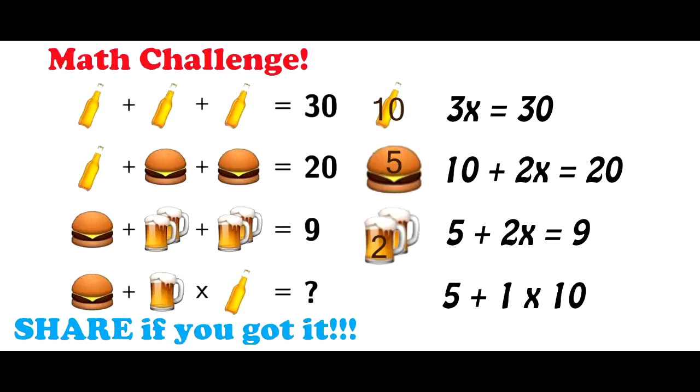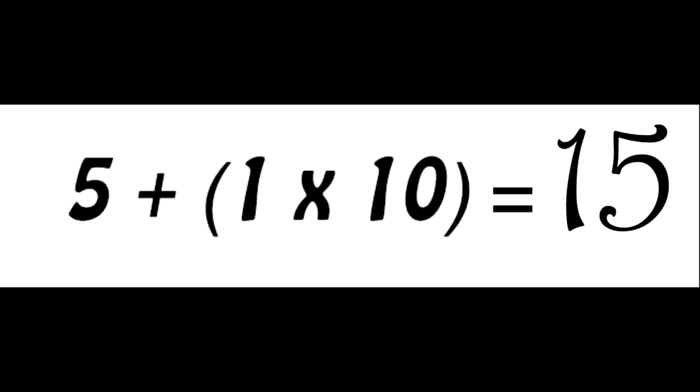And because of the order of operations, you have to multiply the beer mug by the bottle before adding to the burger, and that's really what got a lot of people. The real answer is fifteen.